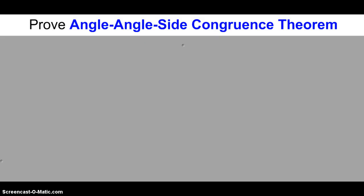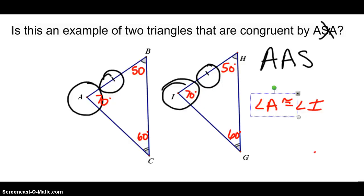But because of that Third Angles Theorem, we actually have another congruence theorem which helps us with this problem we were just looking at. We would automatically see that A is congruent to I because the other two corresponding angles are congruent. Therefore, if the third angles are congruent, can we say that the triangles are congruent?